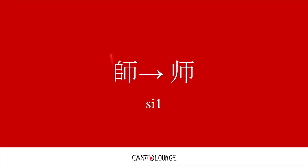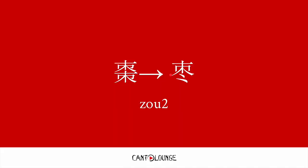And then 师, this bit is represented by this bit, simplified — 师 meaning teacher. And 枣, which is a type of fruit... plum, maybe? And then this bit is represented with two dots, which means a repeat of the top.